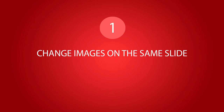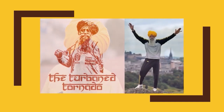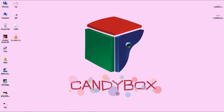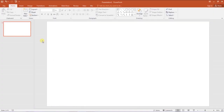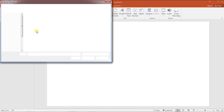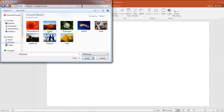Welcome to the PPT box. Today we will learn how to fade and change multiple images on the same slide. First of all, import your images in the slide and make the height and width of all the images the same, so that these can be overlapped over each other.